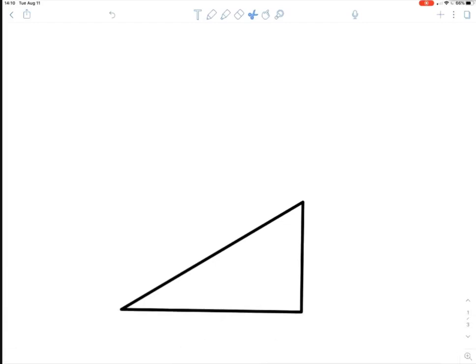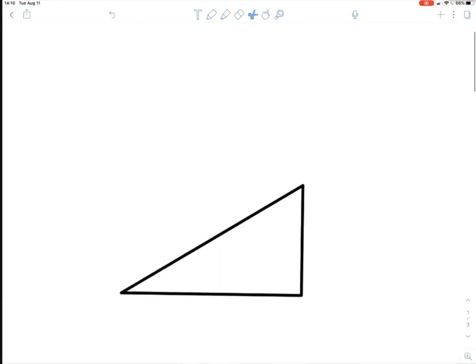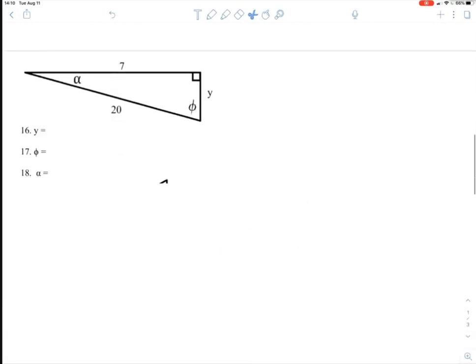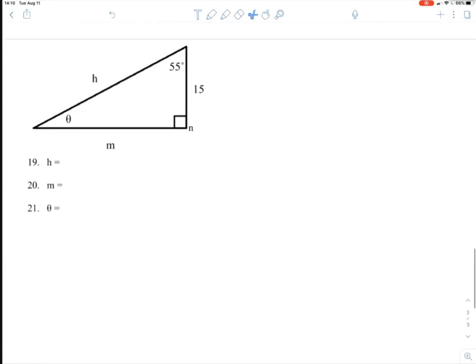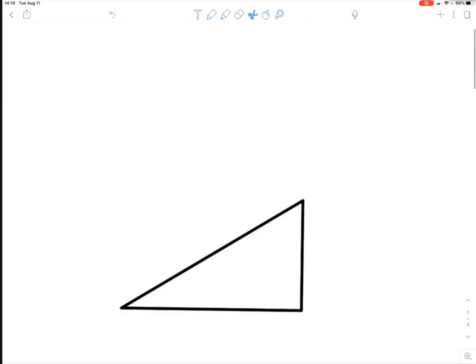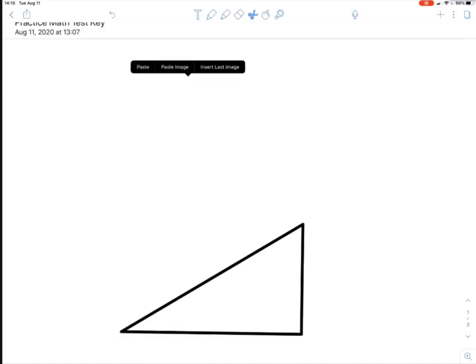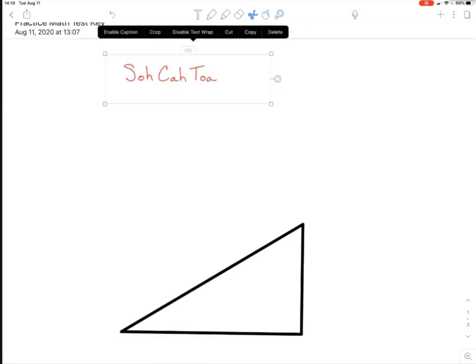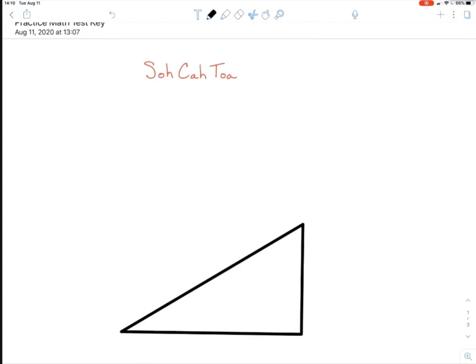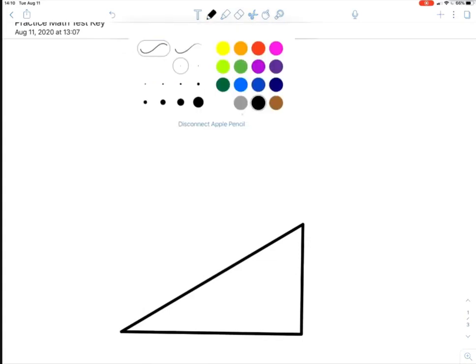Hey students, this is Miss Pink and I'm going to show you how to do the problems on your practice math test, the ones that have triangles, numbers 16 through 21. The first thing we need to remember is SOHCAHTOA. So here we have SOHCAHTOA and what SOHCAHTOA stands for.